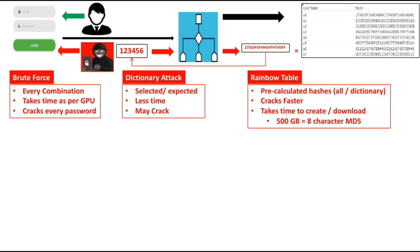This involves a lot of data to build or download, but once you have the rainbow table, you can crack the password and this process is faster.